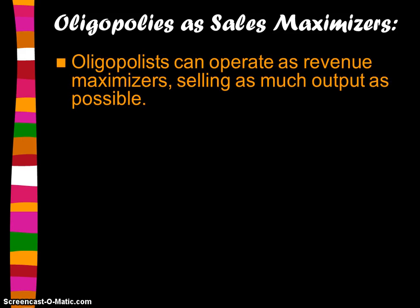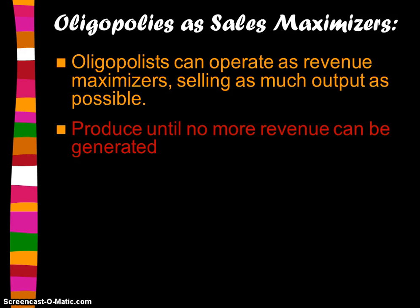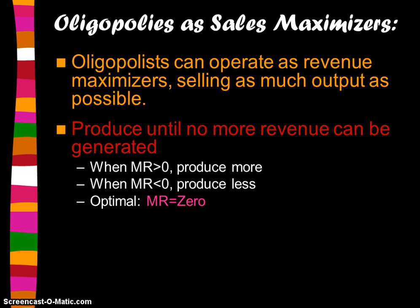Option two is that oligopolists sometimes act as sales maximizers. They can operate as revenue maximizers, meaning they want to sell as much output as possible, producing until no more revenue can be generated. A firm won't produce when MR is negative, because then they're in the inelastic portion of their demand curve, causing total revenue to fall. So when marginal revenue equals zero, that is the highest possible level of output a producer would ever sell — past their profit-maximizing point, sacrificing some profit to get more sales.